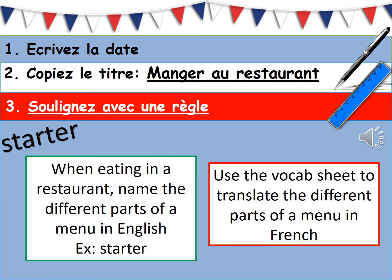For today's starter I need you to be thinking with your own experience about when you are eating at a restaurant, what are the different parts of a menu called in English. So for example, first you get your starter. I want you to write the rest of the possibilities that you can have on a menu. Then looking at the vocab sheet, you need to be looking at the different parts and finding what they are called in French.